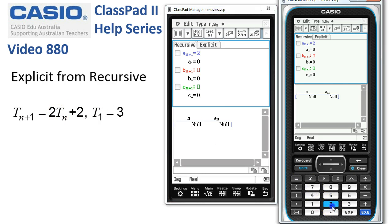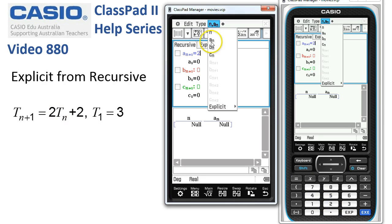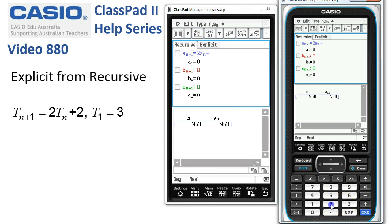Enter the rule. So we'll put a 2 and that times the 1 before. Add 2.